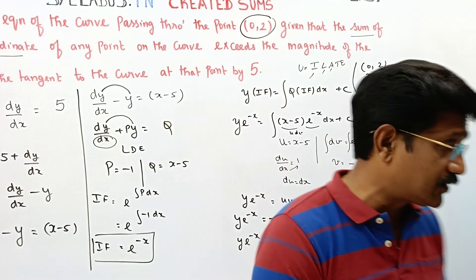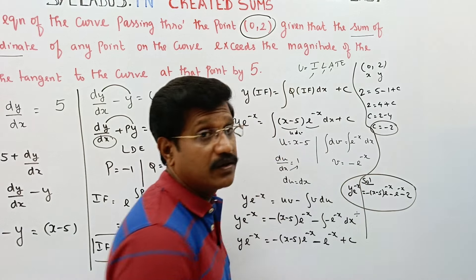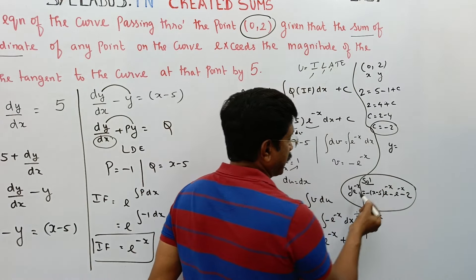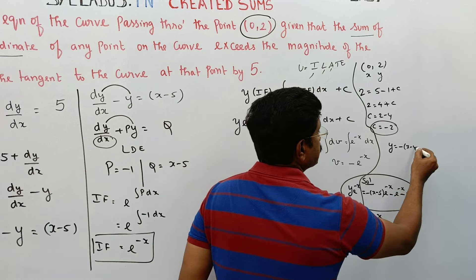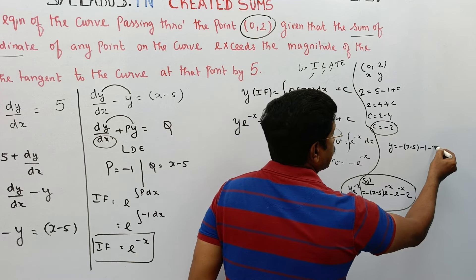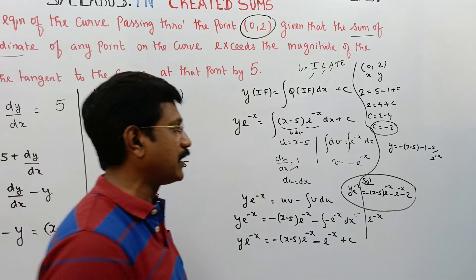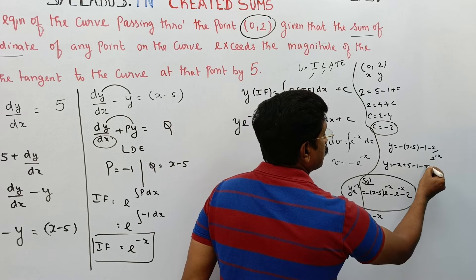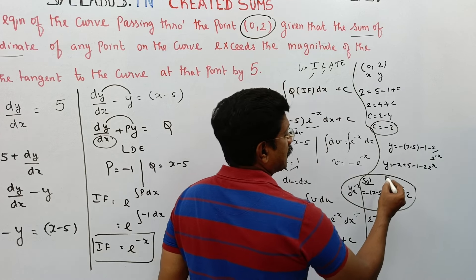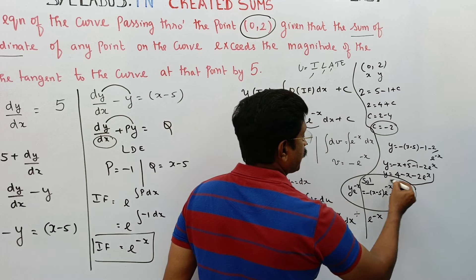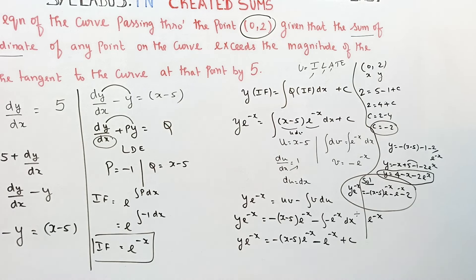You can simplify further by dividing all terms by e^(-x). Cancelling e^(-x) throughout: y equals minus(x minus 5) minus 1 minus 2·e^x, which simplifies to y equals 4 minus x minus 2·e^x. This is the fully simplified final answer.